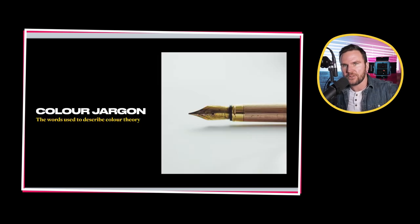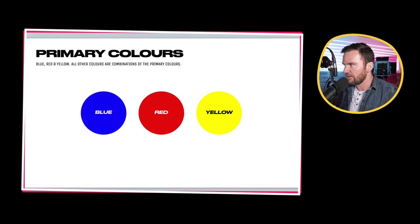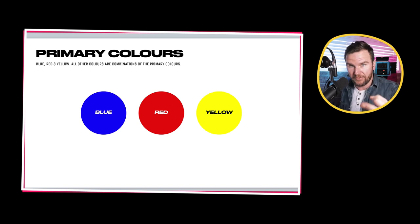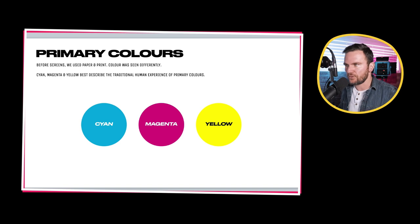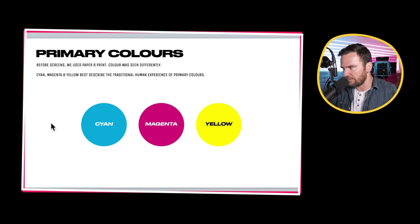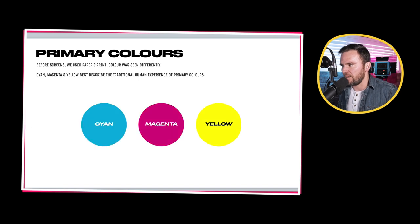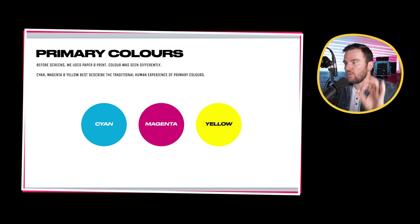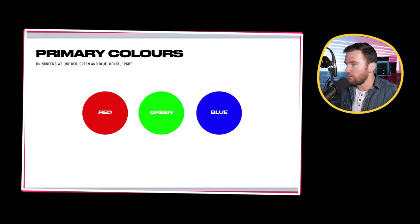Let's talk about the jargon used to describe color theory. The primary colors are red, yellow, and blue — those three. Pretty much all color is made up of these three. In the print world, we used cyan, magenta, and yellow. On screens, we typically use red, green, and blue — RGB. Moving forward, we're just going to be referencing RGB.